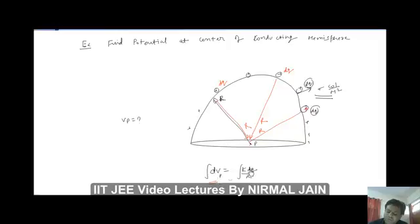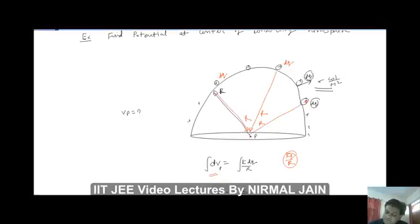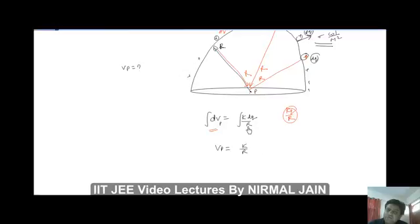So we can say that small potential at point P due to small DQ will be K times small DQ, which could be treated as a point charge. We know that potential due to point charge is KQ by R. So K DQ by R is the potential due to these DQs at this point P. So if I move this K by R outside the integration and integrate these DQ, then what I will get is KQ by R.